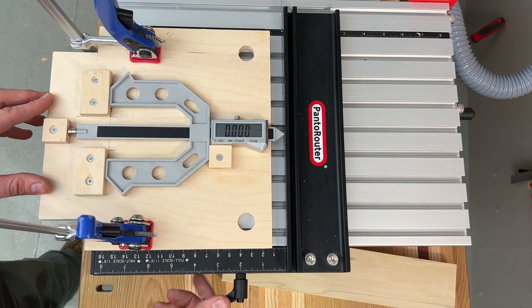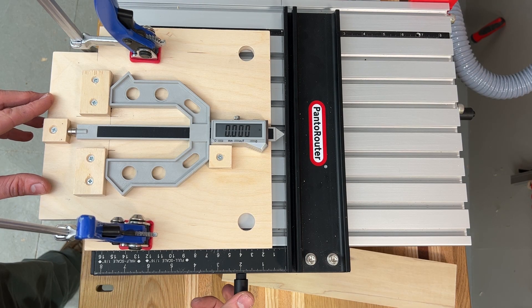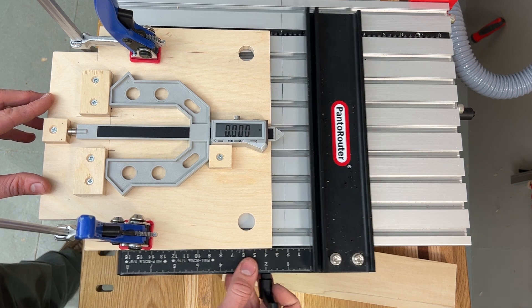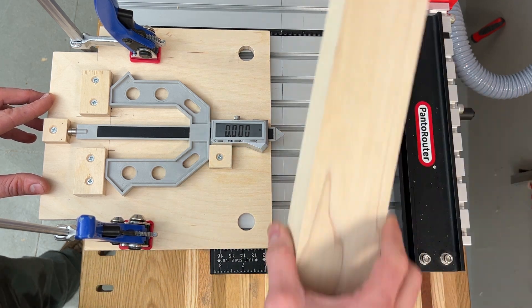Just slide the jig to its stop against this side of the table, and slide the fence to gently contact the gauge, and your fence is perfectly centered on the table.